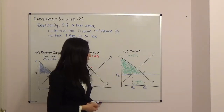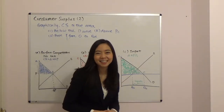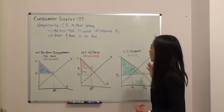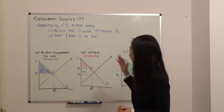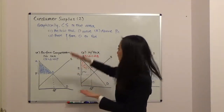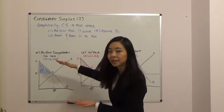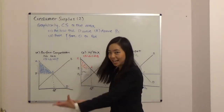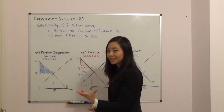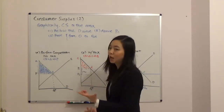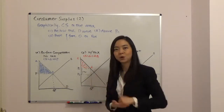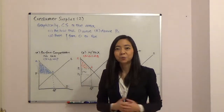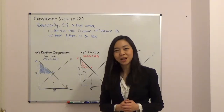So that's what happens when we have imports. Consumer surplus is always the area below the demand curve, above the price paid by the consumer, and the base of the triangle — sometimes a trapezoid — is from zero to the quantity demanded in the market. I hope this helps and good luck with your studying.